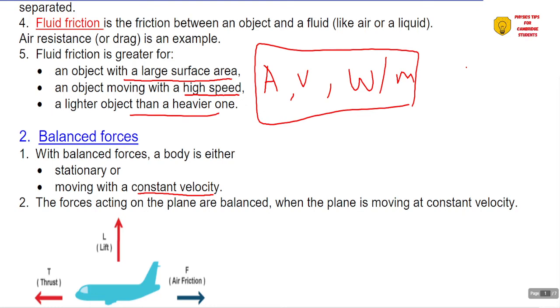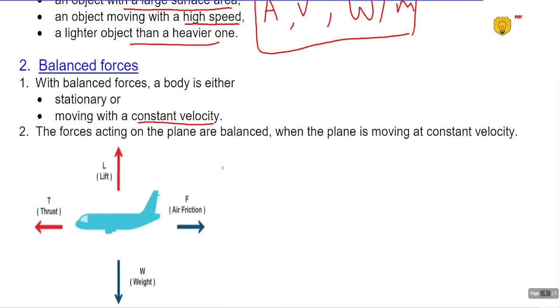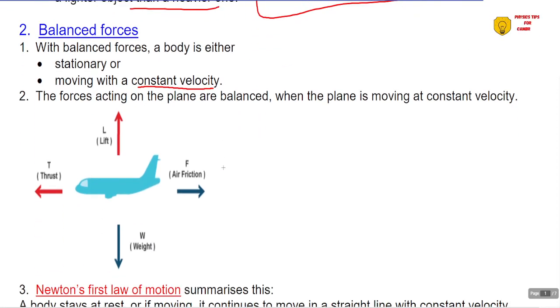Now the forces acting on the plane here are the lift, the weight, so the lift and the weight balance so that this plane does not move either up or down. And then also the thrust from the engine and air friction tend to move in opposite directions, so which means the plane will be moving with a constant velocity.